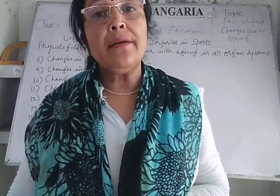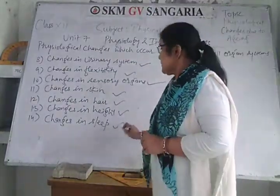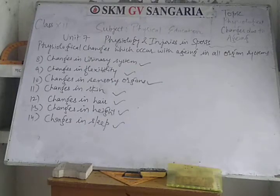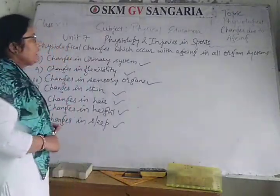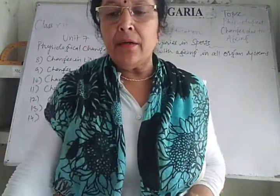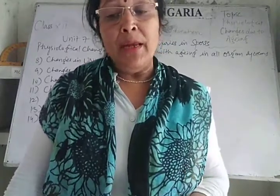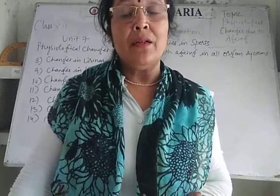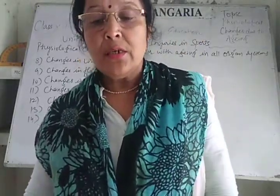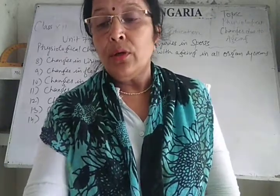Number 14 is changes in sleep. Changes in sleep and circadian rhythm occur as age increases. Older people sleep less at night and may not sleep as deeply compared to young people, so their sleeping hours become less.